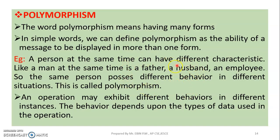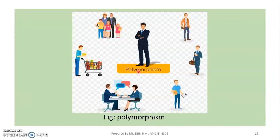Polymorphism means different characteristics at different times. In a programming case, we have to consider a particular operation whose behavior is different in different instances. The behavior is different in different situations. This is the ability to take more than one form, and this is called polymorphism.